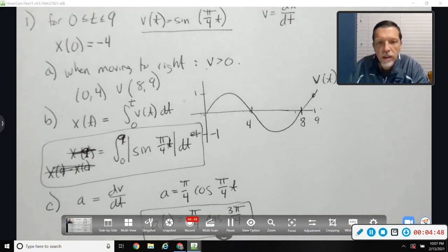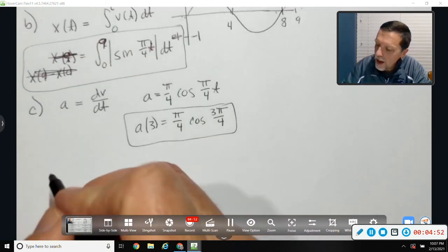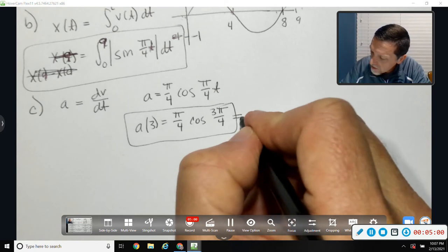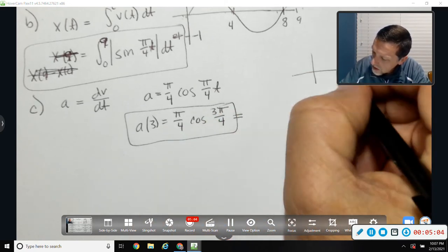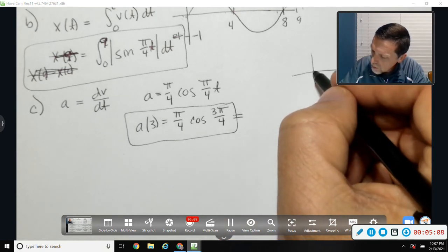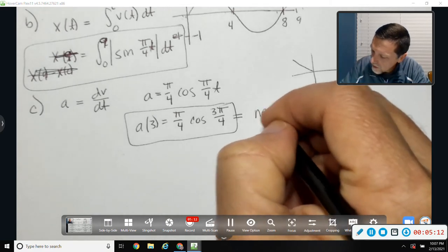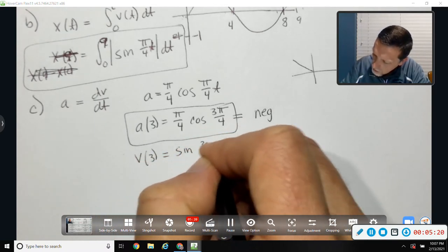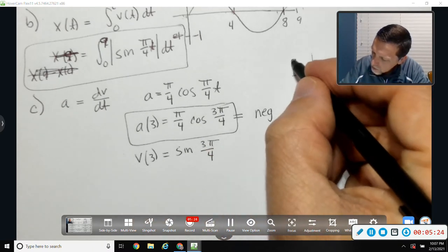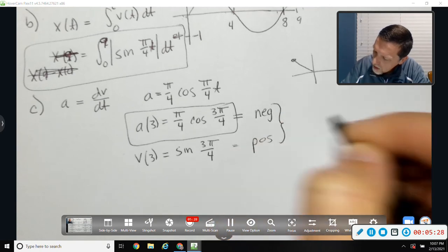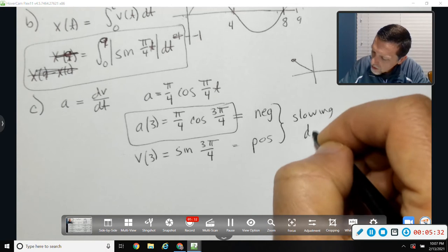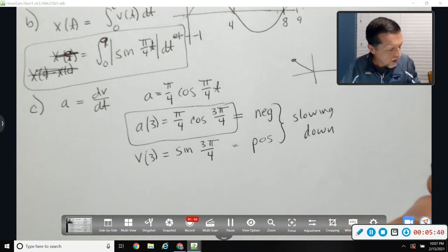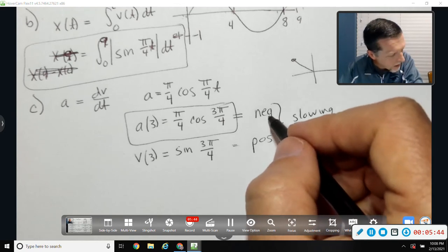Is the particle speeding up, slowing down, or neither? Remember, speeding up means velocity and acceleration have the same sign. If they have a different sign, it's slowing down. So I need to know if that's positive or negative. Cosine of three pi over four. That would be right there. So that would be negative. V of three, sine of three pi over four, the sine would be positive. So those are different signs.